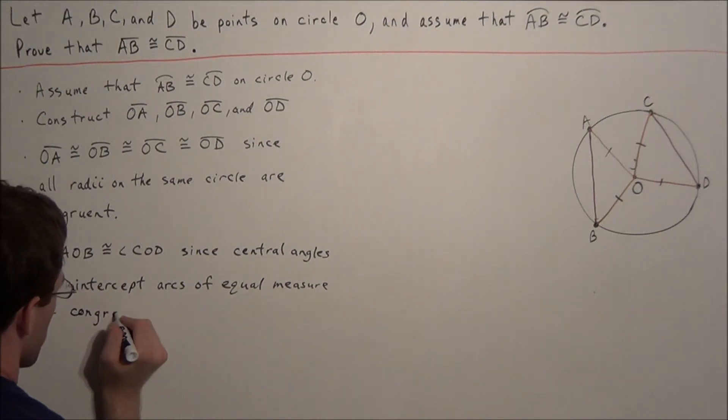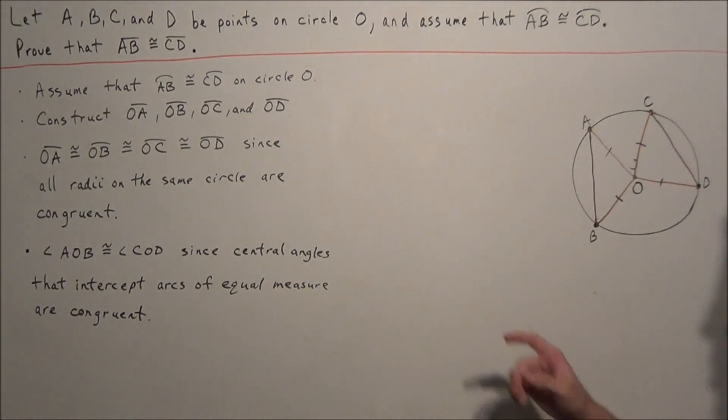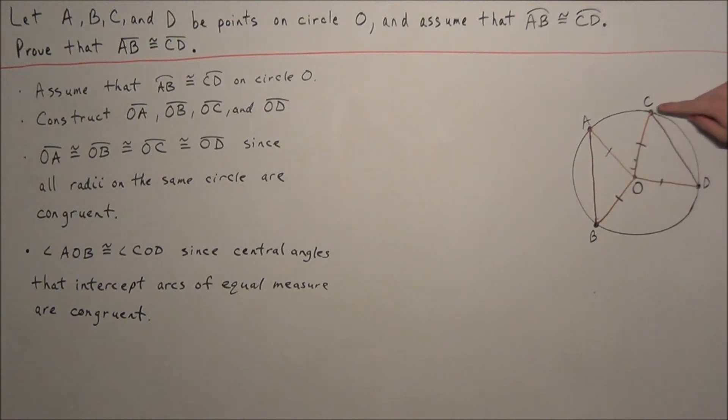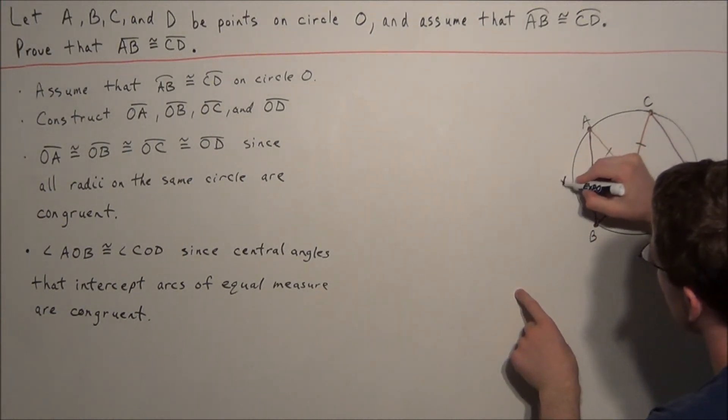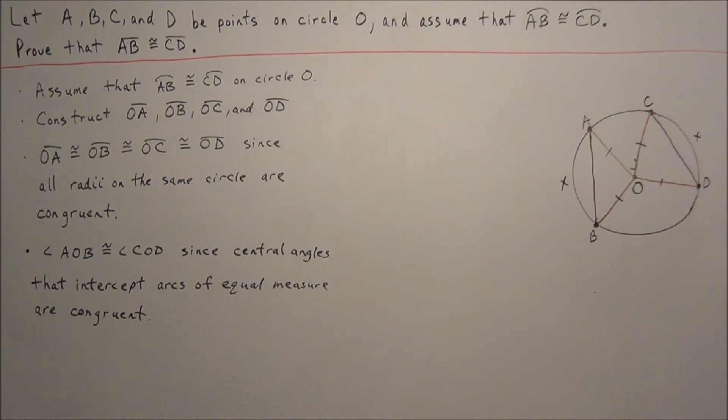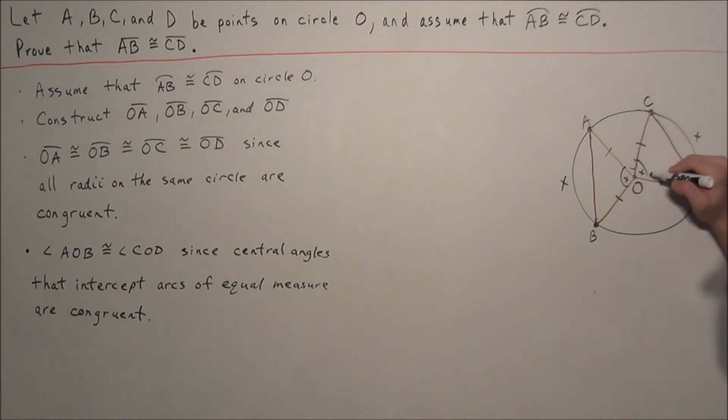So we'll just explain this part here in a second. So we have that central angles that intercept arcs of equal measure are congruent. Remember in the beginning, we assumed that arc AB was congruent to arc CD. So what this tells us, let's say we call the measure of arc AB X. We know that if arc AB has a measure of X, then arc CD also has a measure of X. And central angles are directly equal to the arcs that they intercept, so we could call these two angles here X as well. Which tells us that these two angles are equal. So that was the strategy and the reasoning behind this step here.